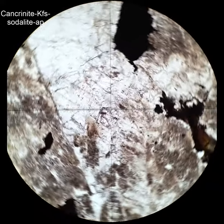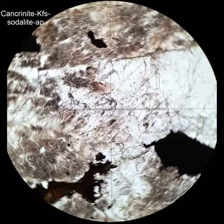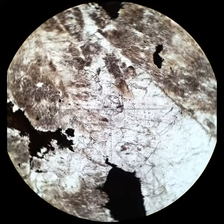And so here's some more cancronite. When I cross the polars, you'll see it's got the bright interference colors. Low relief, really, you don't notice it until you cross the polars and then, oh, there's cancronite in there.